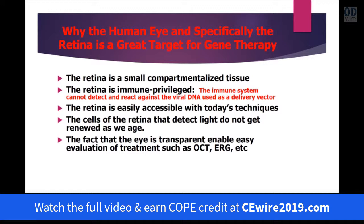The retina is also very easily accessible — as you know, we do injections in the eye all the time. It's very easy to view the retina, whether through OCT, ERG, or direct view. Importantly, the cells in the retina do not regenerate over our lifetime, so we don't have to worry about new cells being produced that carry genetic mistakes. So the retina itself seems to be one of the best places for gene therapy to be initiated, and I think you'll find it already has been done and will be done much more so in the near, intermediate, and far future.